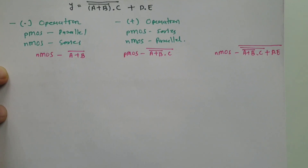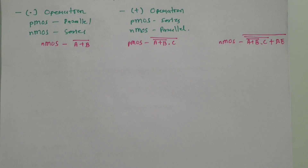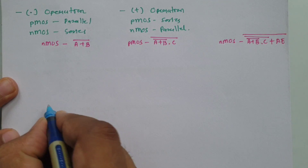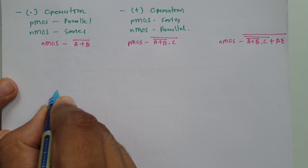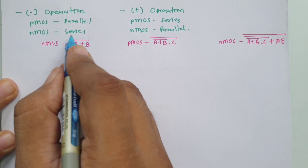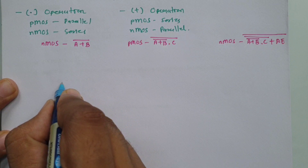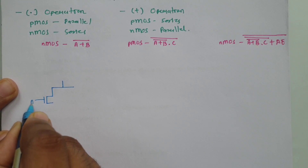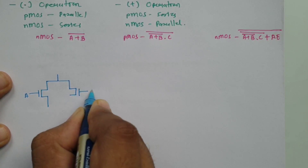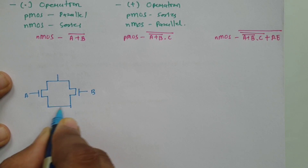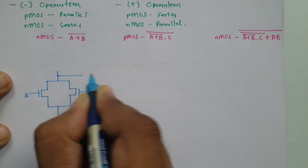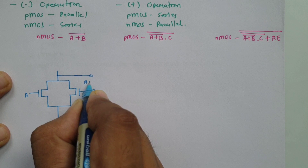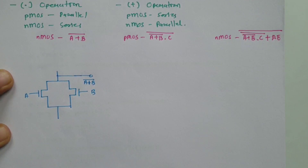First, we make the NMOS block for (a + b) whole bar. For a plus operation in NMOS, the connection should be in parallel. So in the NMOS block, a and b are connected in parallel, and we take the output from the upper terminal. This output is (a + b) whole bar.